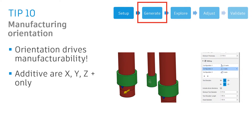One other thing to note: while CNC, casting, and two-axis cutting work in both the positive and the negative orientations, additive manufacturing settings will only apply in the positive X, the positive Y, and the positive Z. We'll show a little bit about what that means now.